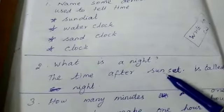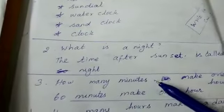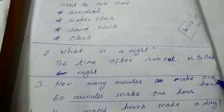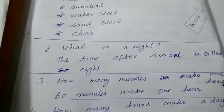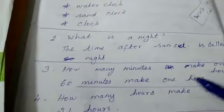S-U-N-S-E-T, sunset. A-F-T-E-R, after. How many minutes make one hour? How many minutes make one hour? 60 minutes. 60 minutes make one hour.